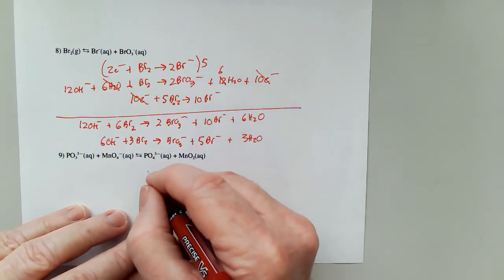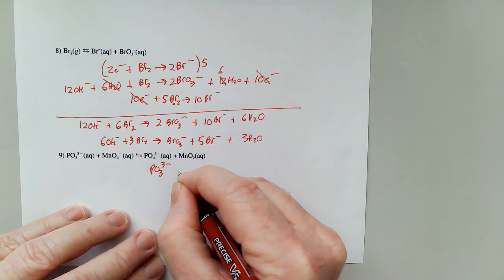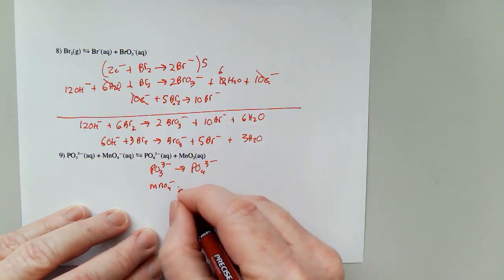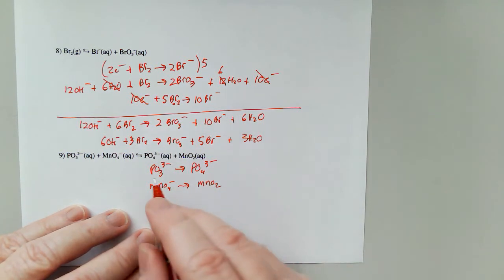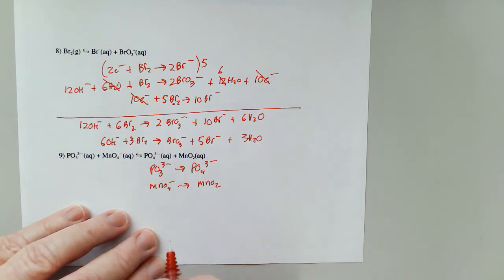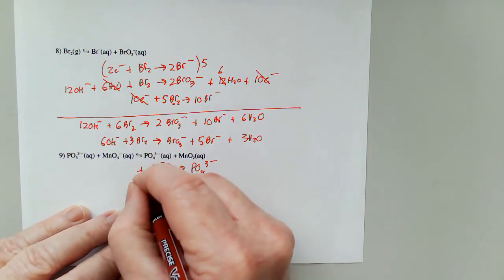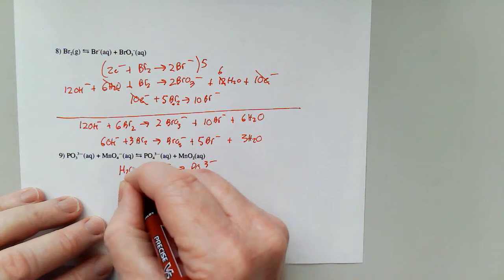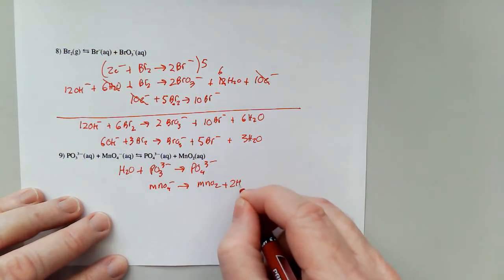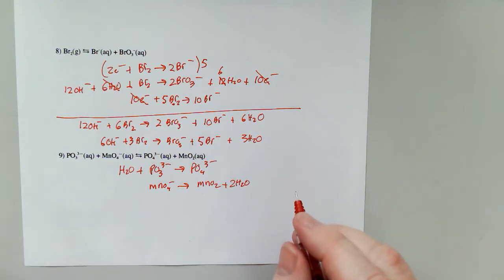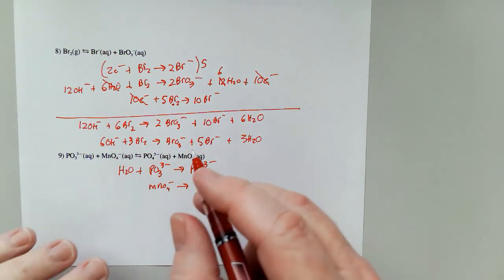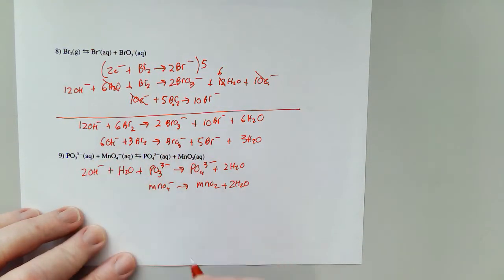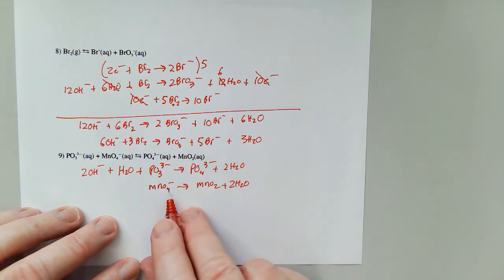Our last one here: PO₃³⁻ goes to PO₄³⁻ and MnO₄⁻ goes to MnO₂. One phosphorus, one phosphorus, one manganese, one manganese. Four oxygens and three oxygens. So I add a water. Four — I add two waters.